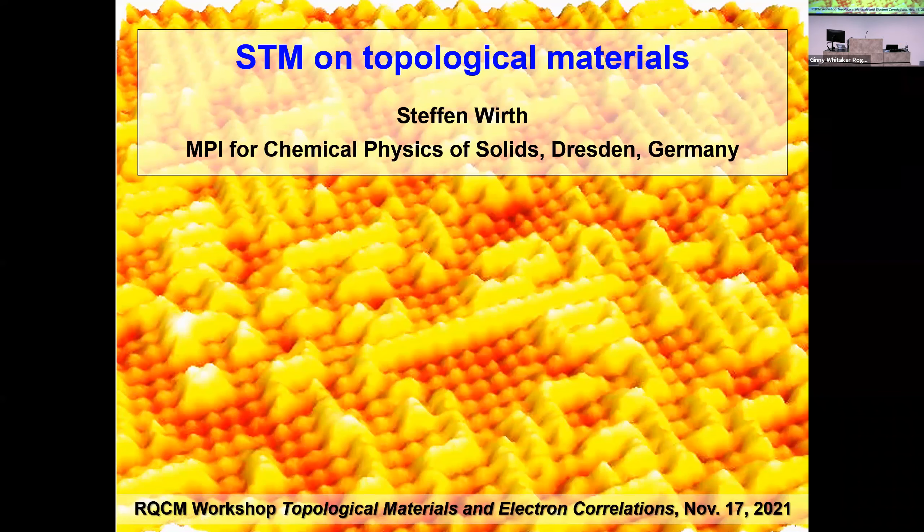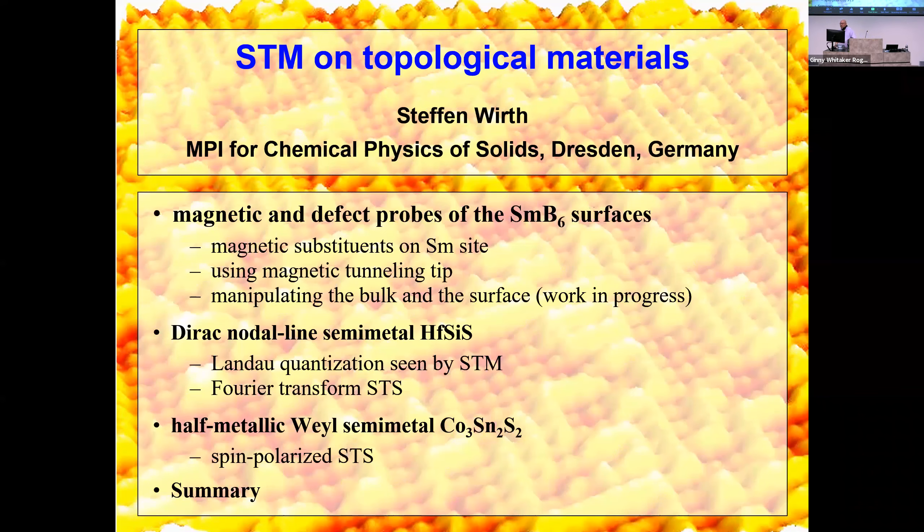Thank you very much for organizing this wonderful workshop. It's my first time traveling again in a while. In my talk, I'll touch on three materials. I'll start with SmB6 (samarium hexaboride), concentrating on topological properties with magnetic substituents using magnetic tips, then briefly touch on sulfide materials: a Dirac nodal line semimetal and half metallic semimetal.